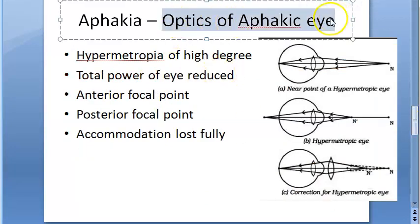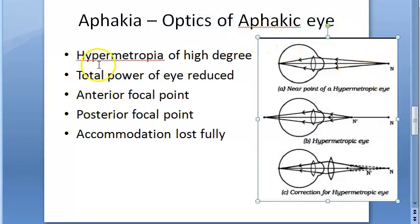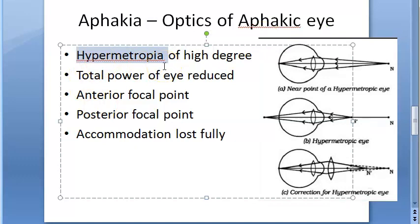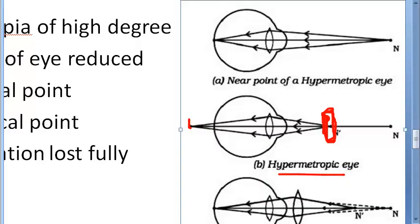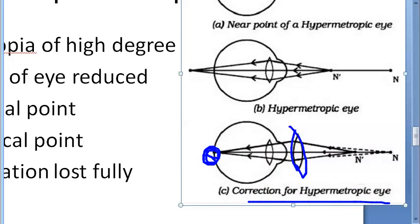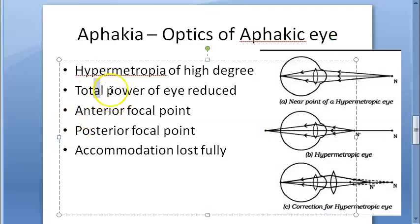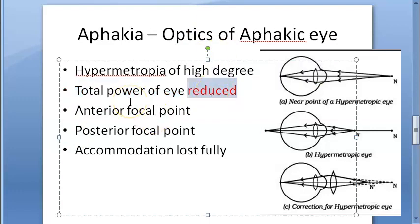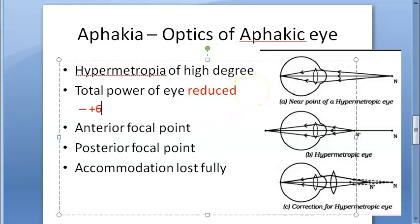Now let us look at the optics of aphakia. After removal of the crystalline lens, there is obviously hypermetropia — and not just normal hypermetropia, it is a very high degree of hypermetropia. The total power of the eye is reduced: normally it is plus 60 diopters, and in aphakia it is reduced to about plus 44 diopters.